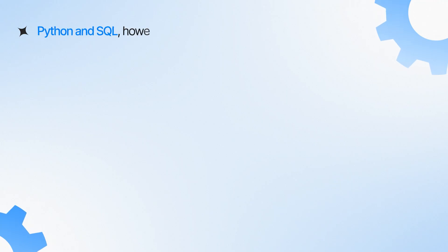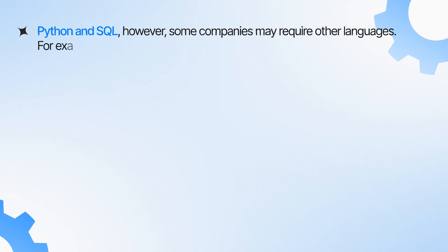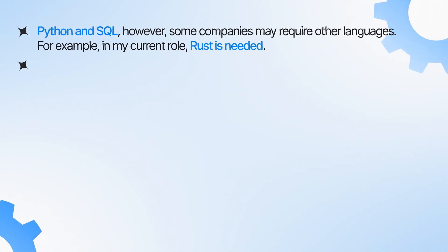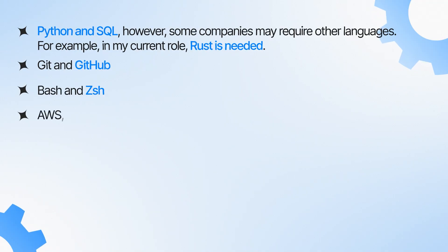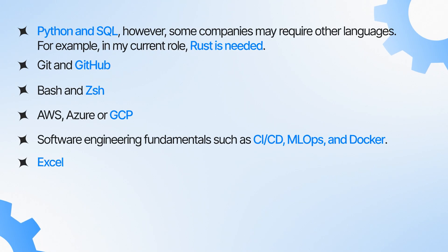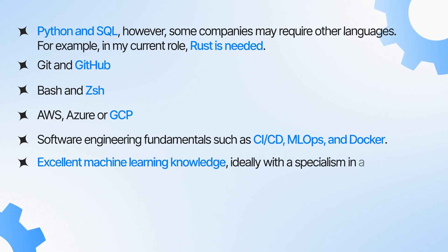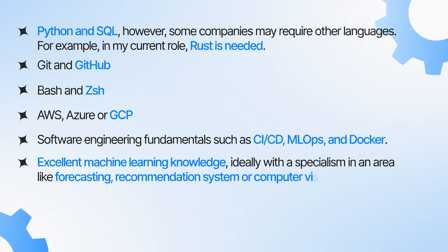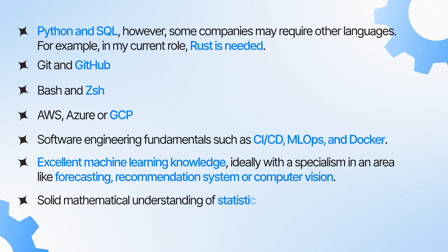As a practicing machine learning engineer, I can tell you exactly what you need to know. You need Python and SQL, though some companies may require other languages — I'm currently learning Rust. You also need Git and GitHub, Bash and Z shell, AWS, Azure and GCP, software engineering fundamentals like CI/CD, MLOps and Docker, excellent machine learning knowledge ideally with a specialism in forecasting, recommendation systems, or computer vision, and solid mathematical understanding of statistics, linear algebra, and calculus. So it's software engineering skills plus a wide skill set in machine learning and maths.